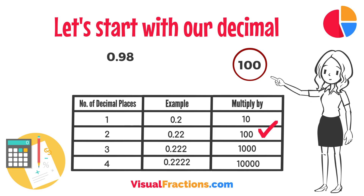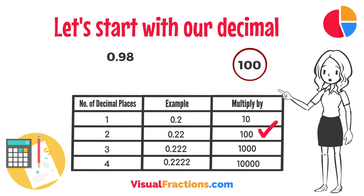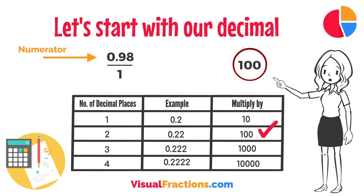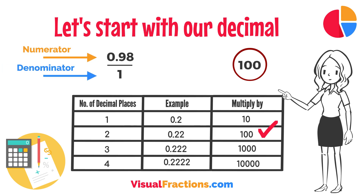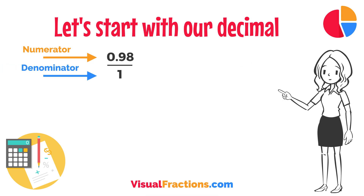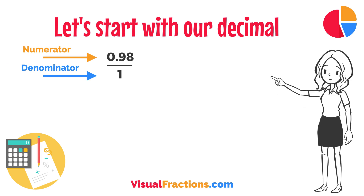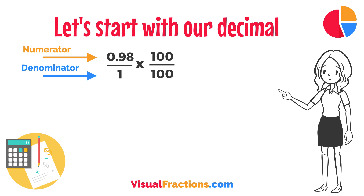To convert this decimal into a fraction, you initially put it over 1, essentially treating the decimal as the numerator in a fraction where the denominator is 1. This sets up the conversion process where we multiply both the numerator, the decimal, and the denominator, 1, by 100 because there are two decimal places.